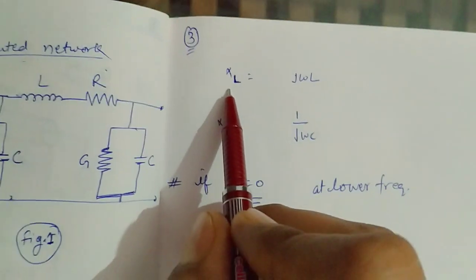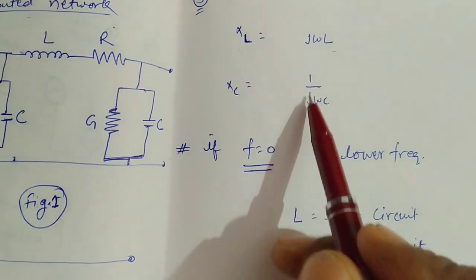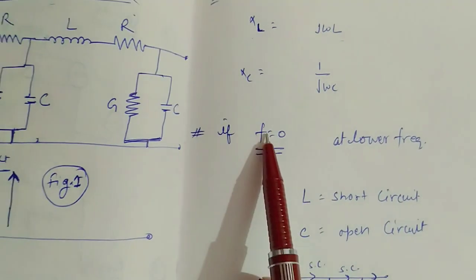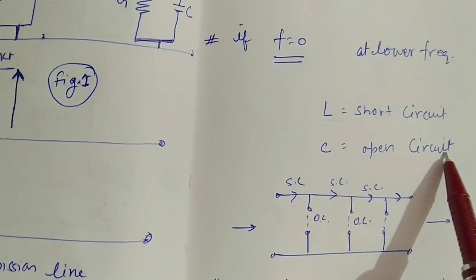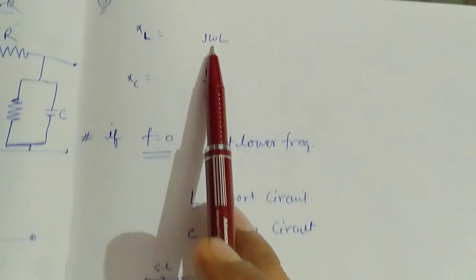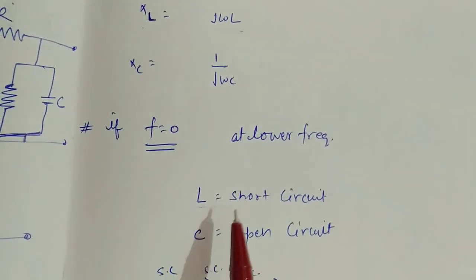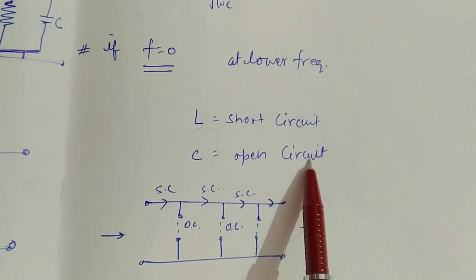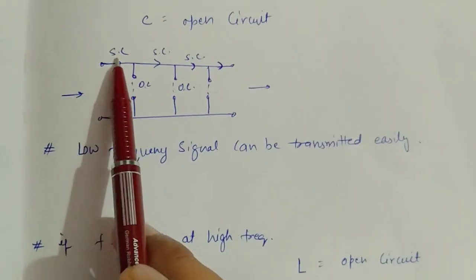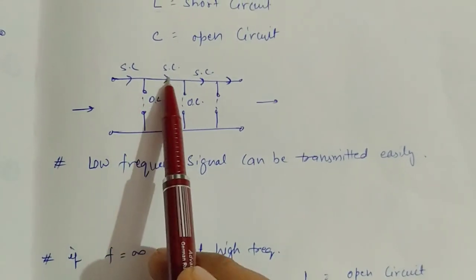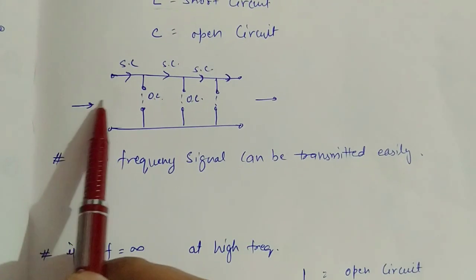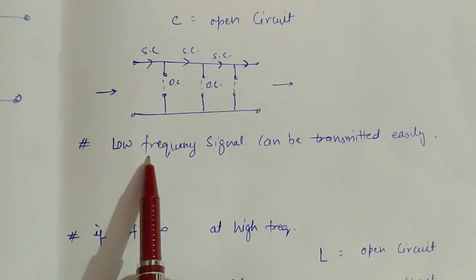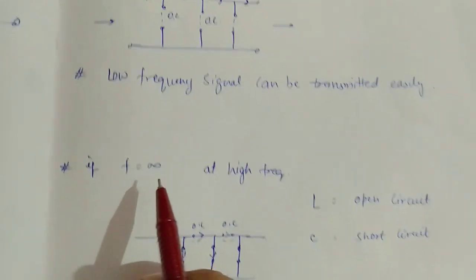Now, the reactance of L is jωL and the reactance of capacitance is 1/jωC. If we consider low frequency, where f approaches 0, then inductance will be short-circuited and capacitance will be open-circuited. So any signal passing through the transmission line sees a series of short (L) and open (C) circuits. This way, infinite loops form and the signal at the input reaches the output without any disturbance. So low frequency signals can be transmitted easily.